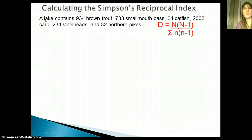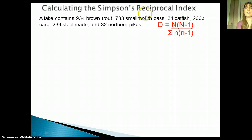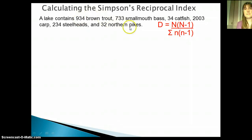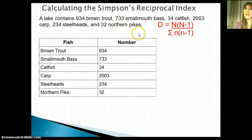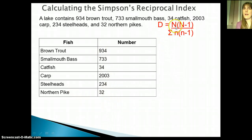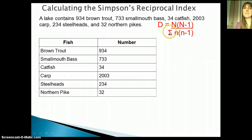Let's say we've got a lake and we want to figure out the diversity of the fish. We have 934 brown trout, 733 smallmouth bass, 34 catfish, and so on. I like to start by creating a chart with all the different species and the number of each. Capital N — the total — is found by adding up all those numbers. Little n corresponds to the count of each individual species, and I see that I have to sum those values.